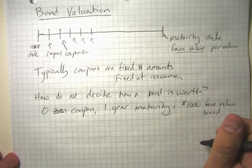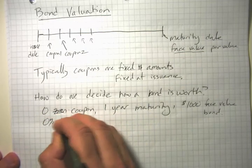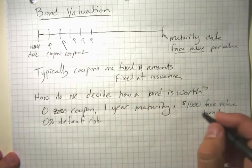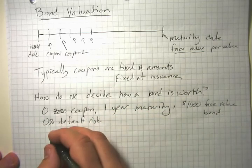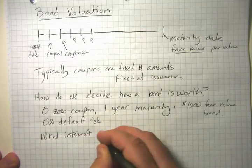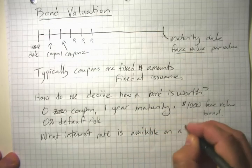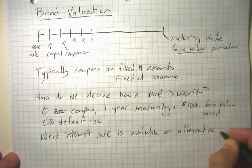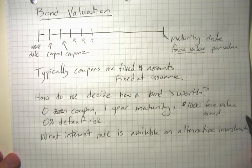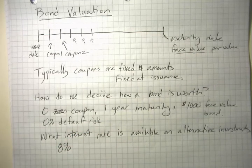That's not quite enough information—we need to know something about its default risk. For now, we'll assume zero percent default risk; we know with certainty this bond will pay us back. We also need to know the interest rate available on alternative investments.